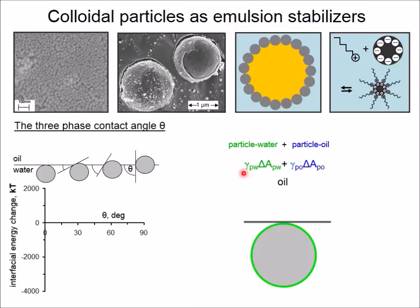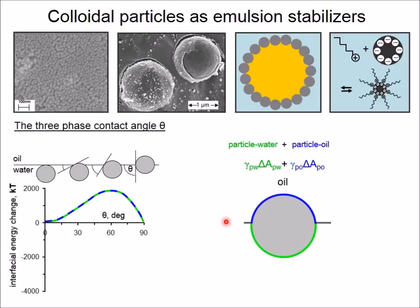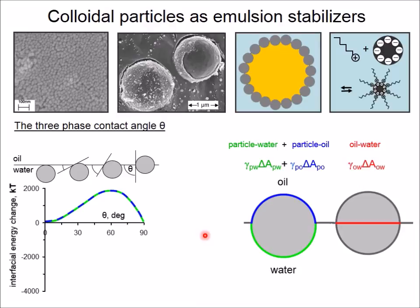We can now plot the entire interfacial energy change of the particle by summing up these two terms. First, we relocate the particle outside of the interface, which corresponds to a contact angle of zero degrees. Now, we immerse the particle into the oil. The immersion is accompanied by an increasing oil-particle surface and a decreasing water-particle surface. From the graph, we can see that for a given contact angle, the interfacial energy change of the particle is always positive. That means it is necessary to supply energy to the particle to make it immerse into the oil-water interface — the particle would not immerse itself spontaneously.